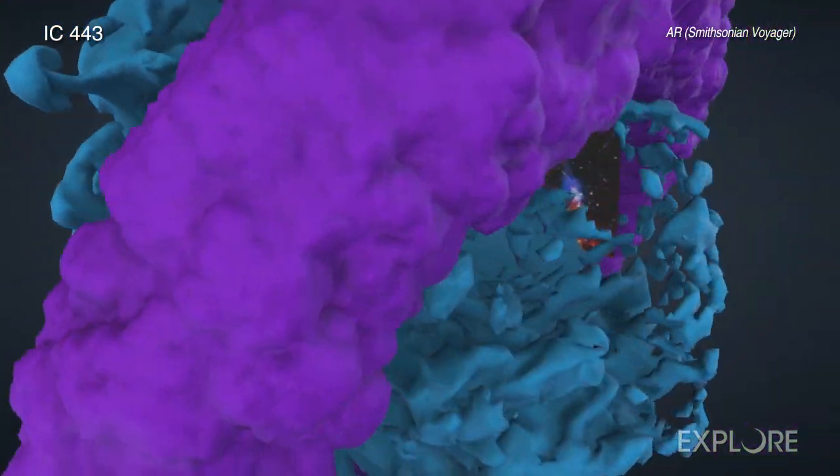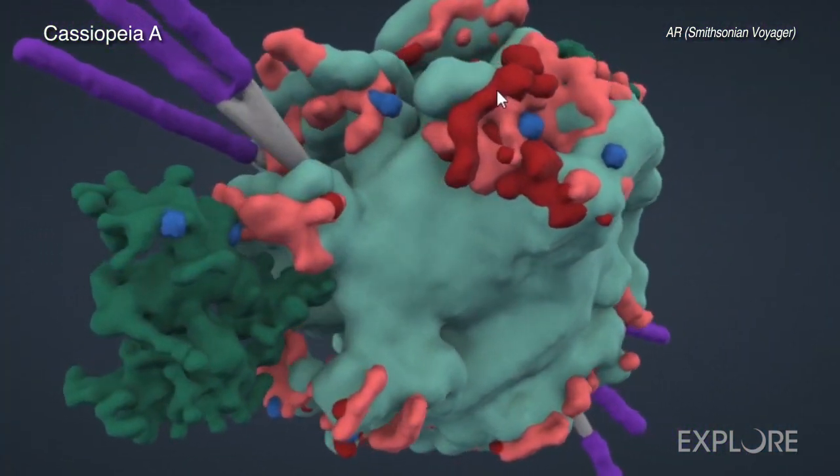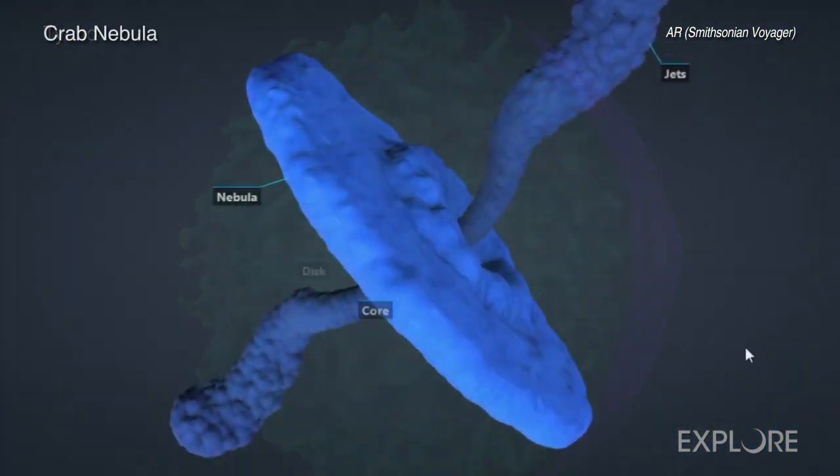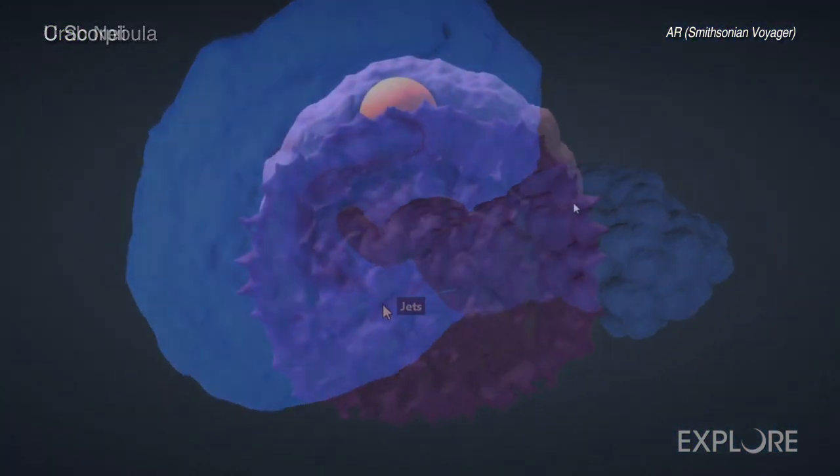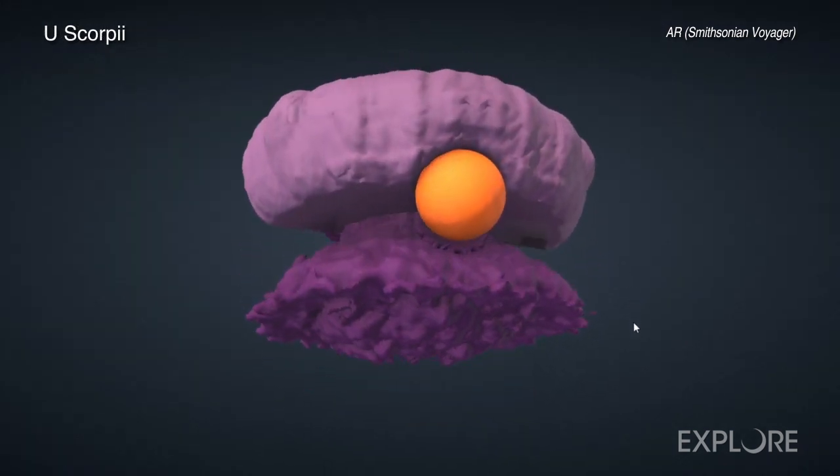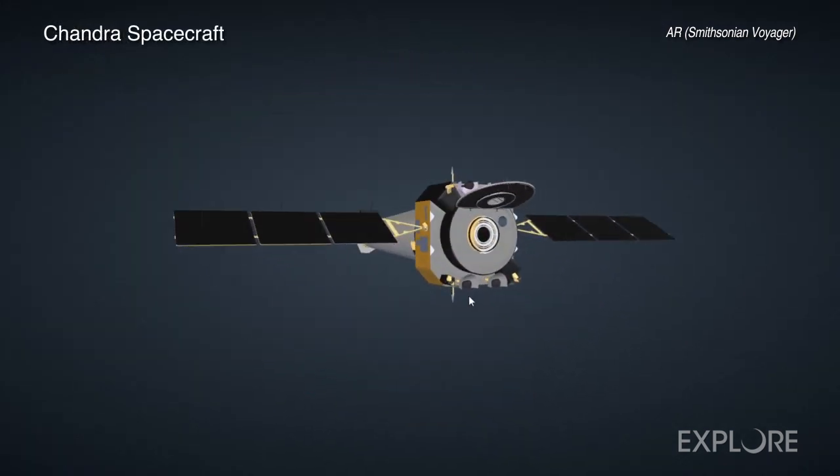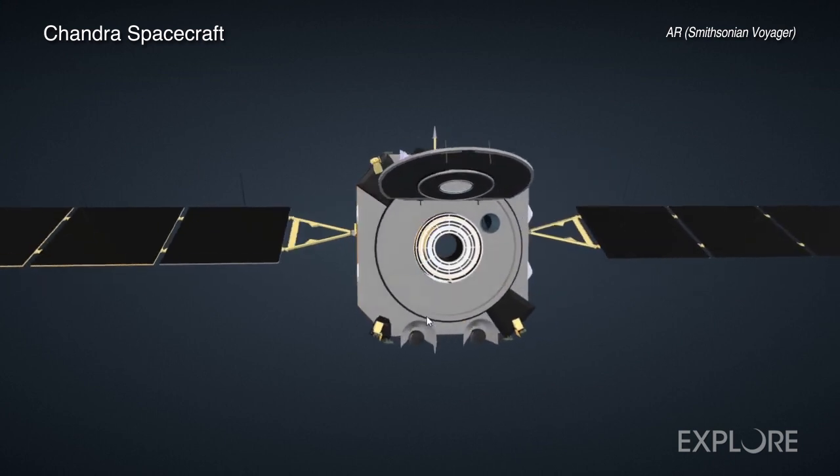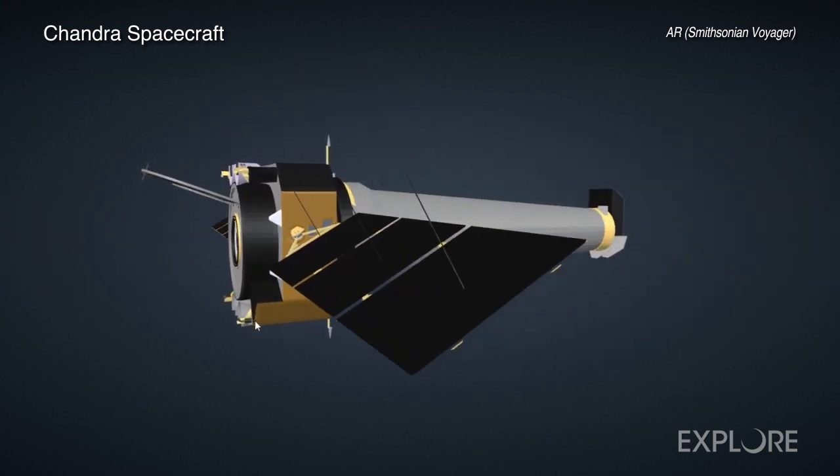IC443 joins other supernova remnants, such as Cassiopeia A, Tycho, and the Crab Nebula, along with other stages of stellar evolution, as well as the Chandra spacecraft itself, all available in the Chandra contribution to the Voyager platform.